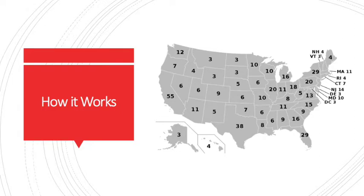Each state gets a number of electors proportionate to its population, and this is shown on the map above. The number of electors per state is equal to the number of reps in the House plus the number of senators. The candidate who gets the most votes in the general election in the state gets all of the state's electors. So when you go to the polls to vote for the president, you aren't voting directly.